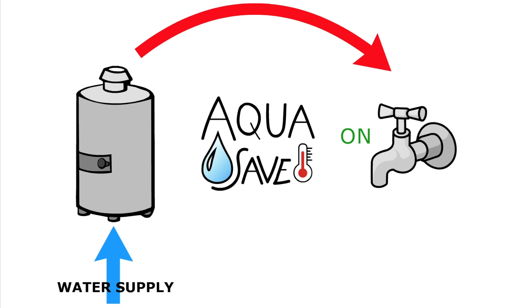Aquasave implements the use of an electronic temperature detector that lets the wrong temperature water flow through another pipe back to the tank. Only when the water reaches the selected temperature will it flow out. This recycles the water that would have been wasted.